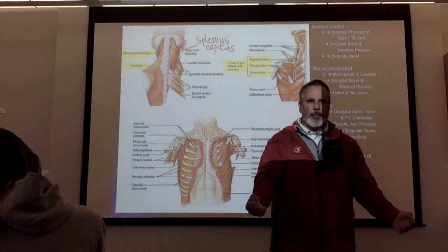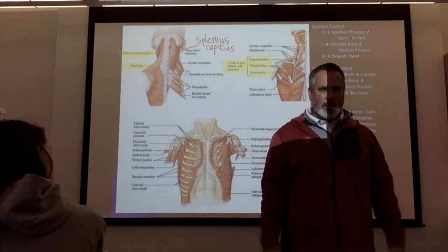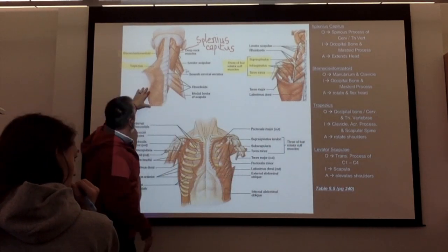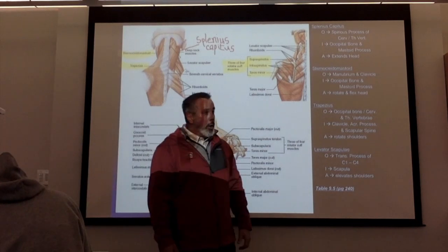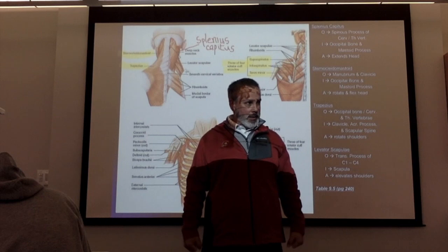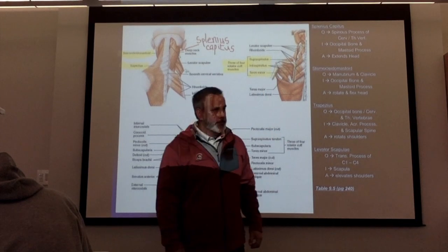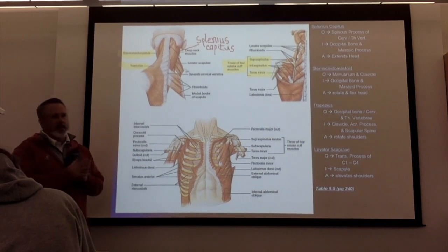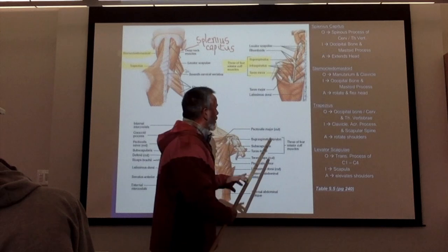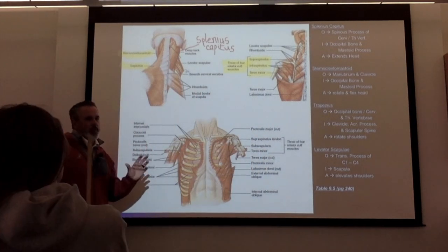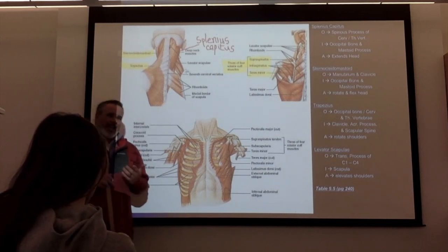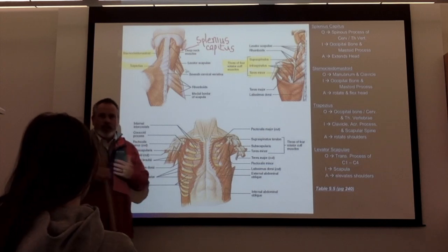Weightlifters doing shrugs with dumbbells — if they just go up, they're only working the top part of the trapezius. If you want to work both parts, go up and back and roll your shoulders. There are lots of muscles inserted and originating from your scapula, so any time you move your shoulders, it's acting on your scapula.